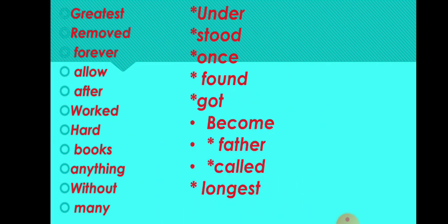Now we can move to Whole Words. These are some whole words we learnt under this unit. Come along with me. The first word: Great Test. Children, while reading these words, just try to remember the spellings. Next word is Removed, Forever, Allow, After, Worked, Hard, Books, Anything.